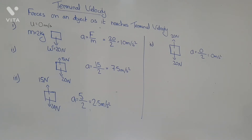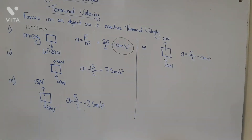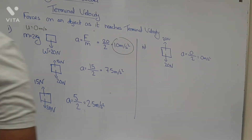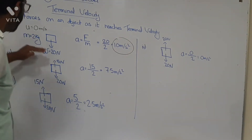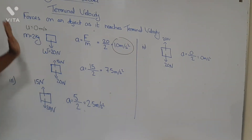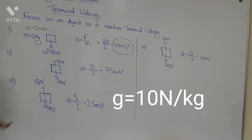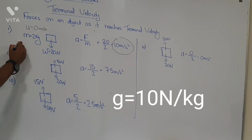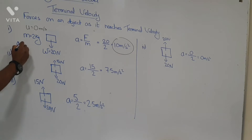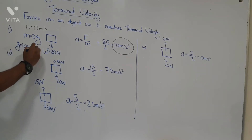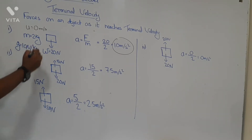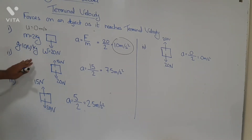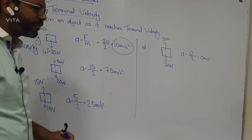We are assuming the weight to be 20 Newtons on the basis that we have taken the gravitational field strength to be 10 N/kg. In O-levels we take it as 10 N/kg.